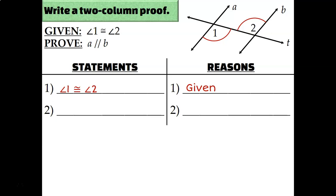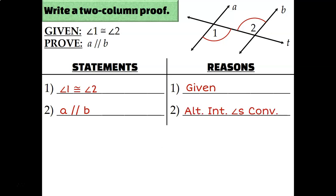Since this is a short two-step proof, go ahead and copy and paste your prove statement on statement number 2 and figure out the reason. Angles 1 and 2 are on opposite sides of transversal T and in between lines A and B, making them alternate and interior. So my reason would be the alternate interior angles converse.